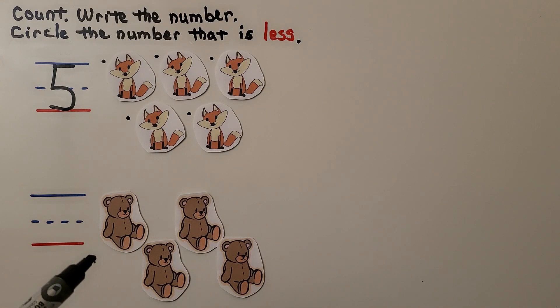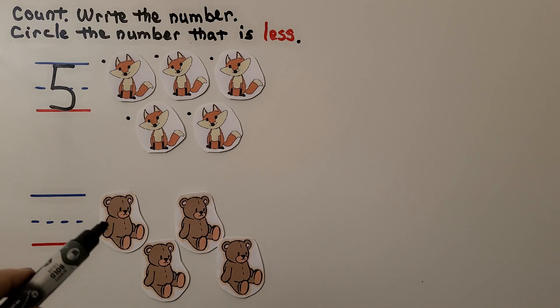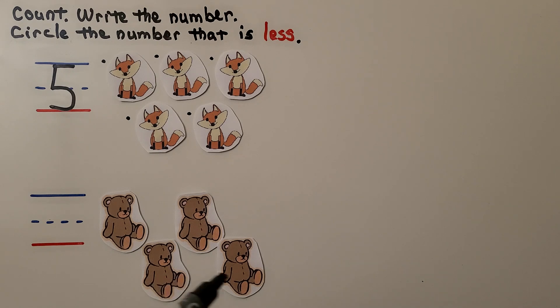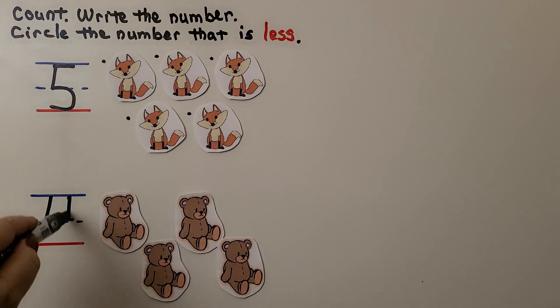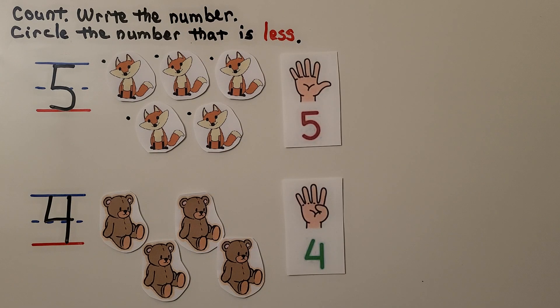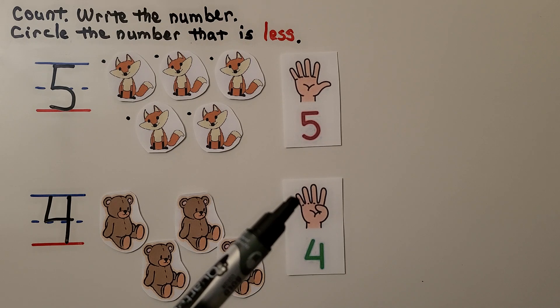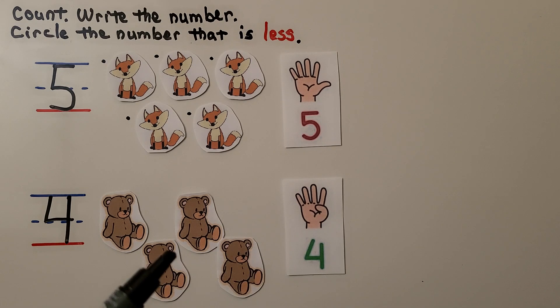Here I can count the teddy bears. There are 1, 2, 3, 4. We hold up less fingers. There's also less teddy bears than there are foxes. The number that is less is 4.